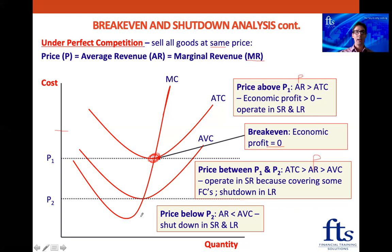And lastly, if the price is below P2, this is very bad news because the price — which is the average revenue — is even below the average variable costs. So we should shut down in both the short run and the long run.